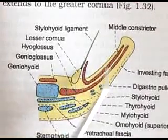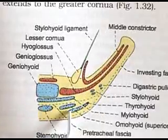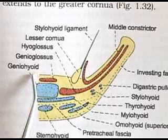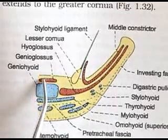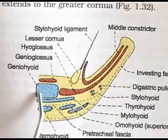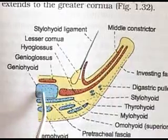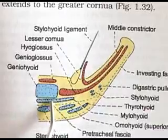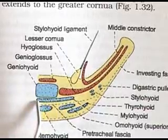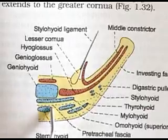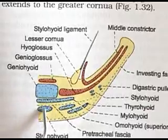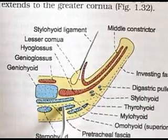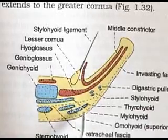Attached to the hyoid bone are numerous muscles. Onto the body is a small part of the genioglossus muscle, which is a muscle of the tongue. Next is the geniohyoid, and below that is the mylohyoid, a muscle of the first branchial arch. Still below are the strap muscles: the sternohyoid, the superior belly of omohyoid, and thyrohyoid.